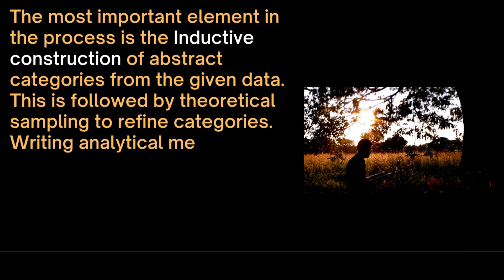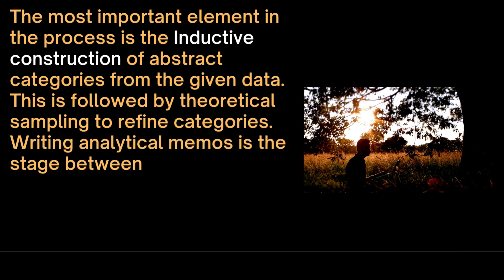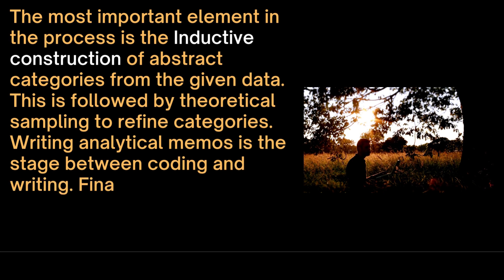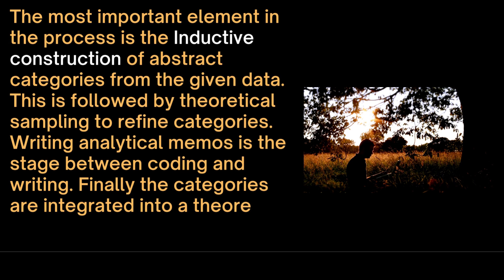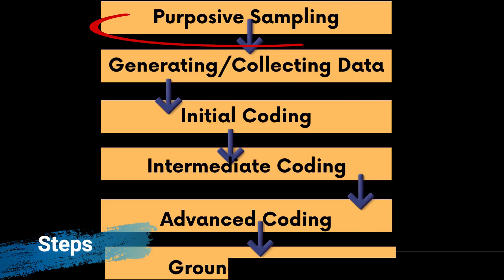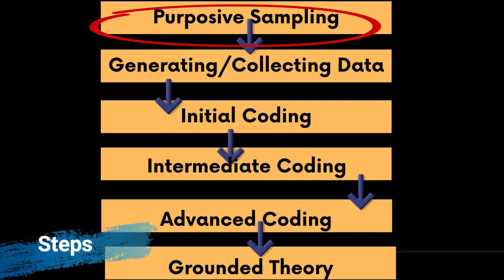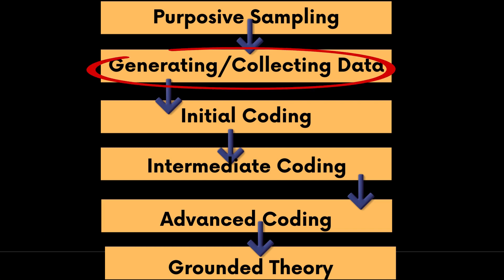Writing analytical memos is the stage between coding and writing. Finally the categories are integrated into a theoretical framework. The grounded theory process starts with purposive sampling. Researchers purposefully select participants and all data sources. Then we collect data. Data could be from surveys, interviews, focus groups or other data.